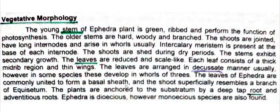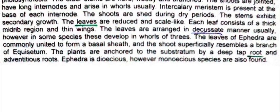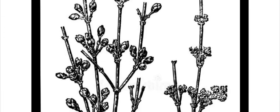The third main part of Ephedra is the root. A deep tap root system is present through which it is attached to the substratum, and adventitious roots are also found. Ephedra is dioecious; however, monoecious species are also found. Dioecious means male and female structures are produced on different plants, but some species produce both on the same plant.